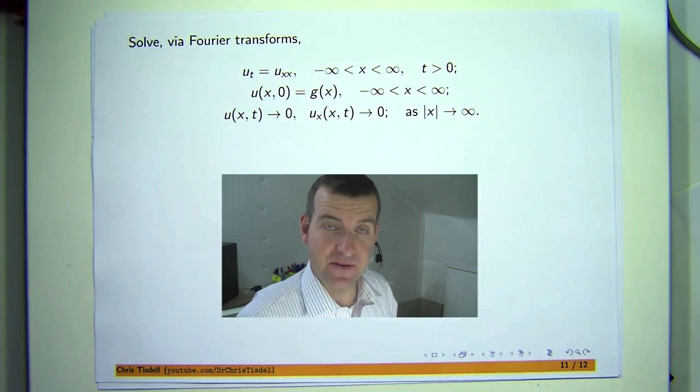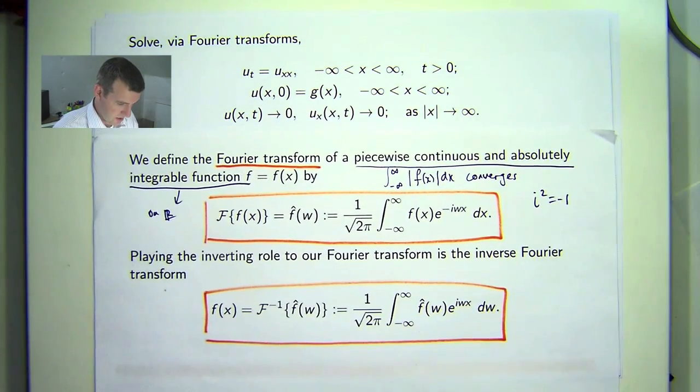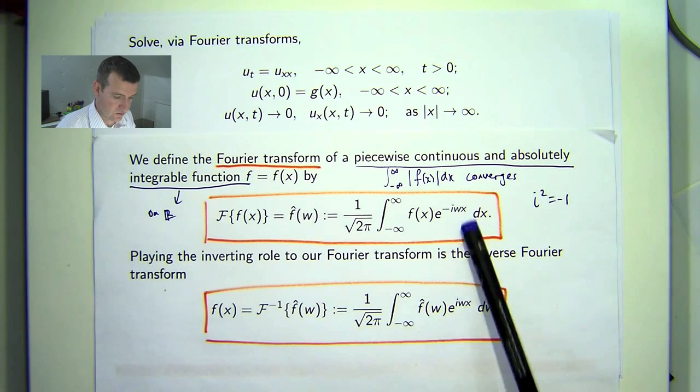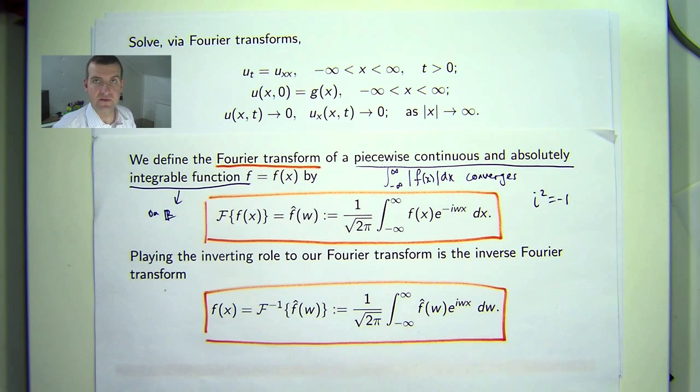Now in previous videos, we defined the Fourier transform of a function, it's an integral transform, and its inverse, which kind of undoes the Fourier transform.